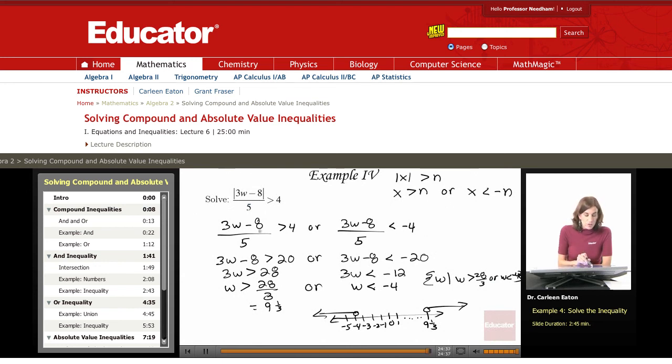So recognizing that this is in the general form the absolute value of x is greater than n, I rewrote this as 3w minus 8 divided by 5 is greater than 4 or the same expression is less than negative 4. Solving each one, and the solution set is the intersection of the solution sets of those two inequalities.